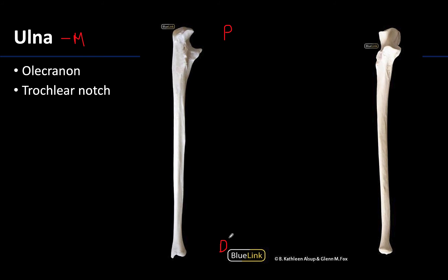There are two dominant structures on the proximal portion of this bone. On the posterior surface of the ulna is the olecranon — this robust region is the point of the elbow, easily palpated on the posterior portion of the elbow, and built up because the triceps brachii muscle attaches there. More anteriorly placed is the trochlear notch, which will articulate with the trochlea of the humerus.